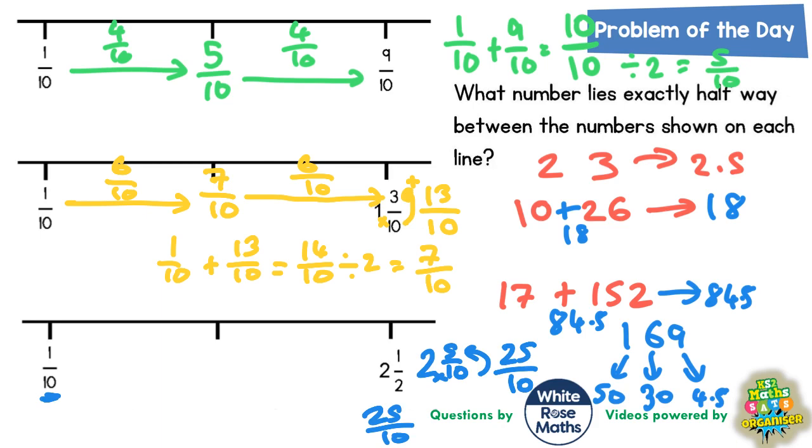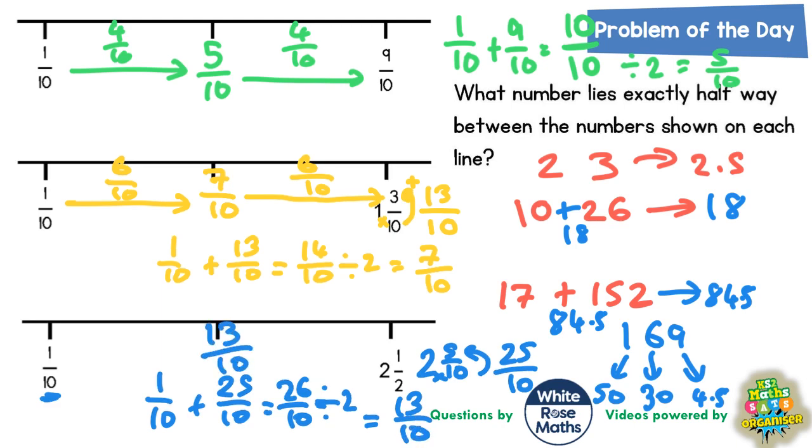Now let's add those two together. So use the rule we talked about earlier. 1 tenth adds 25 tenths is 26 tenths. Half of that, half of 26, would be 13 tenths. When you divide it by 2, you're going to get 13 tenths. So right in the middle there is going to be 13 tenths.